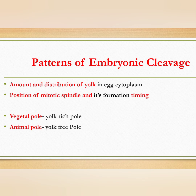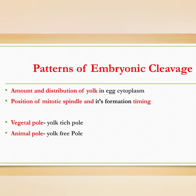The patterns of embryonic cleavage are determined by two factors: first, the amount and distribution of yolk in egg cytoplasm; and second, the position or angle of the mitotic spindle and its timing of formation. Yolk inhibits cleavage — the yolk-rich pole is called the vegetal pole and the yolk-free pole is called the animal pole. Cleavage at the animal pole occurs at a faster rate than at the vegetal pole.